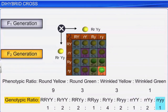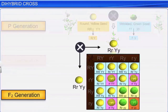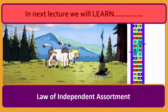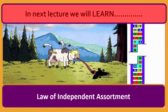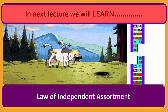Thus, from the dihybrid cross experiment, Mendel found that the gene combination of the progeny differs from the parental gene combination. In the next lecture, we will discuss the law of independent assortment. Until then, goodbye.